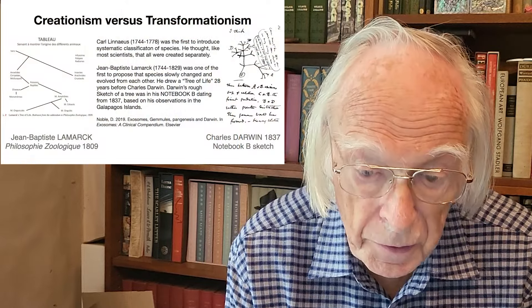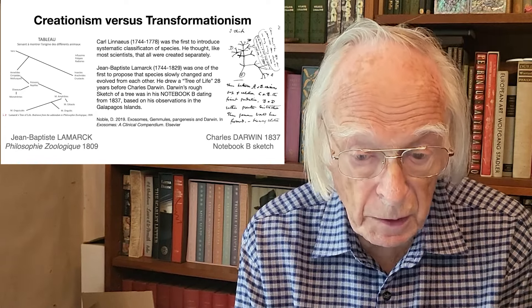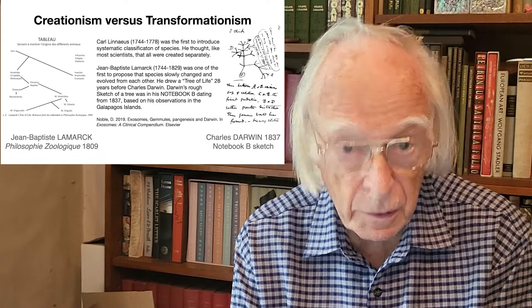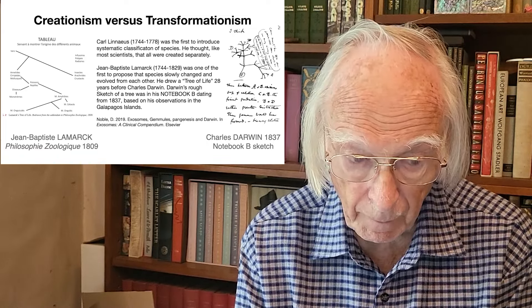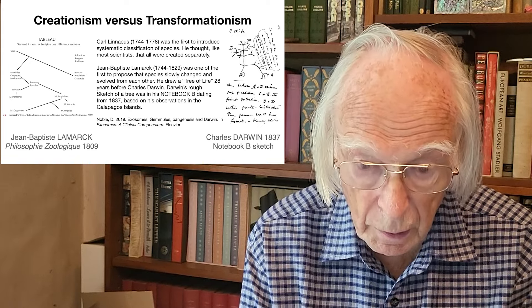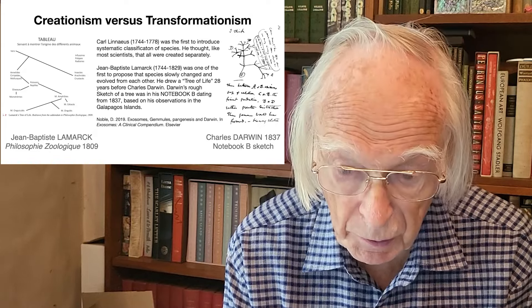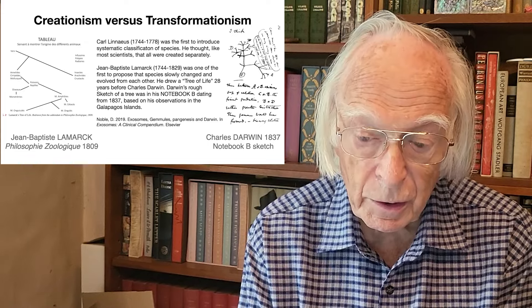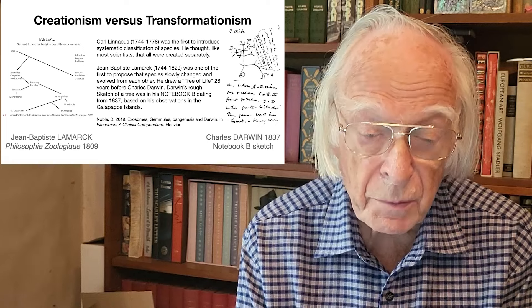First, a little bit of history. Carl Linnaeus was the first person to introduce the systematic classification of species. But he thought, like most scientists at his time in the 18th century, that all species were created separately. It was the great French zoologist Jean-Baptiste Lamarck who was one of the first to propose that species slowly change and evolve from each other. In fact, he drew a tree of life 28 years before Charles Darwin.